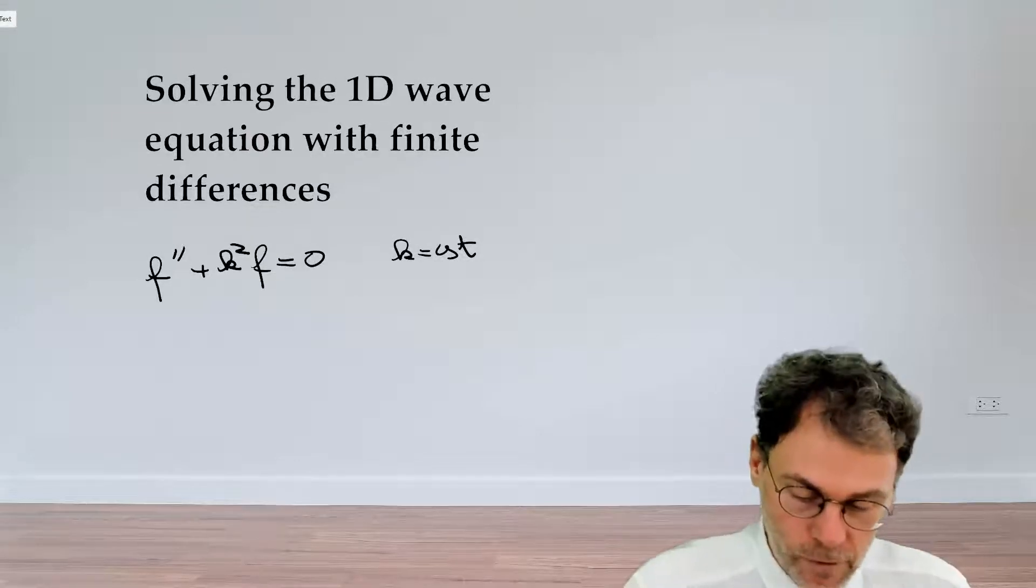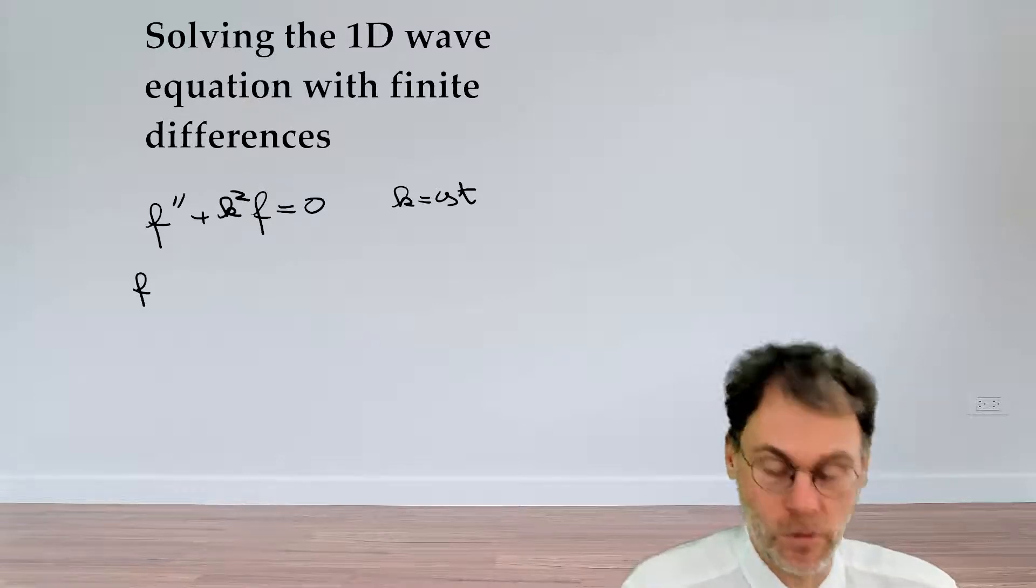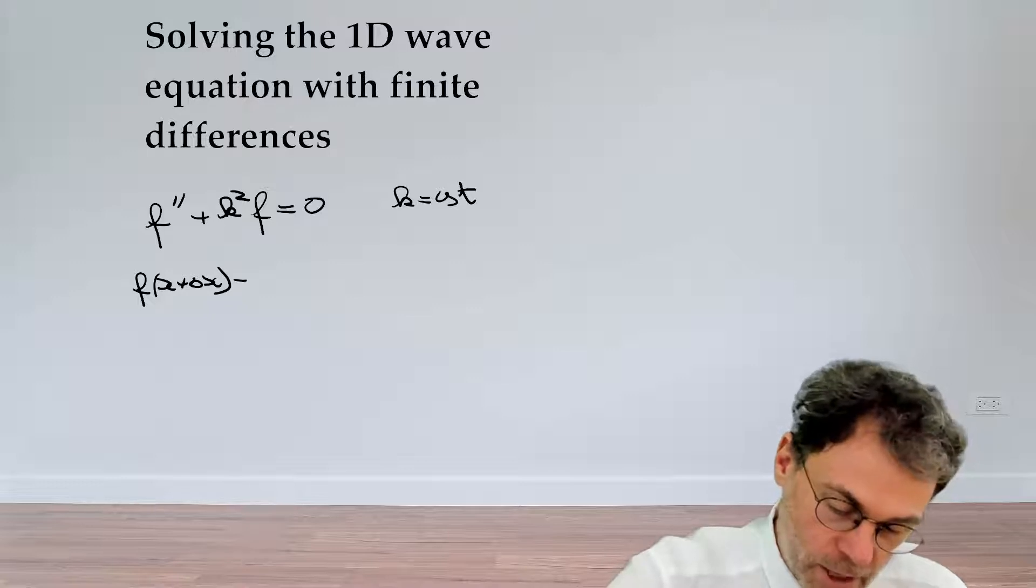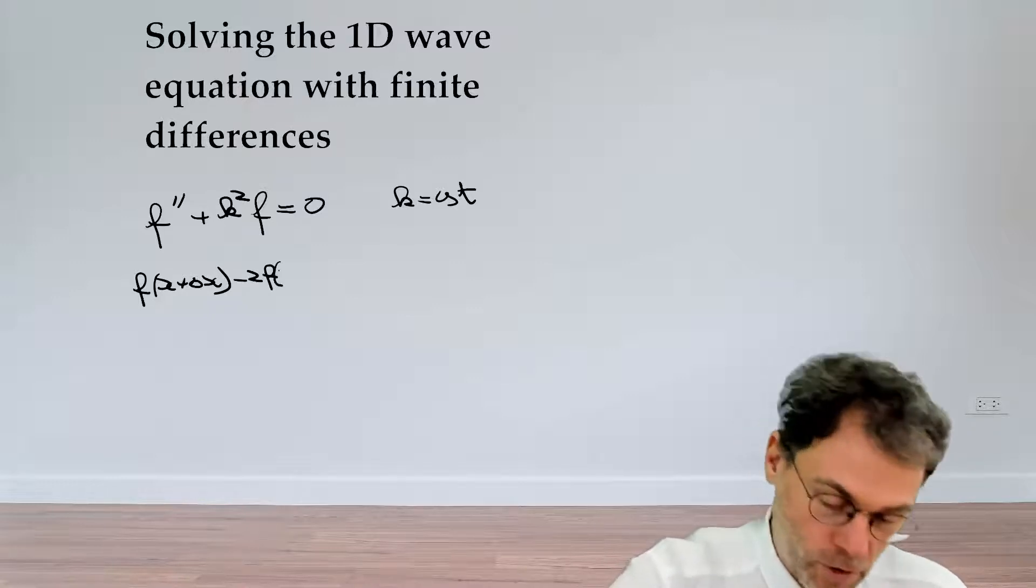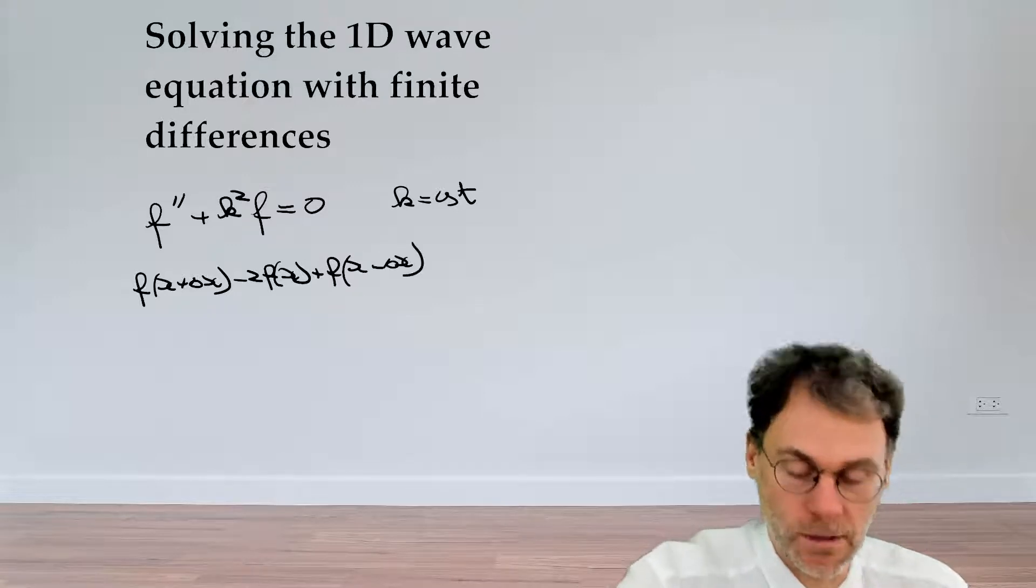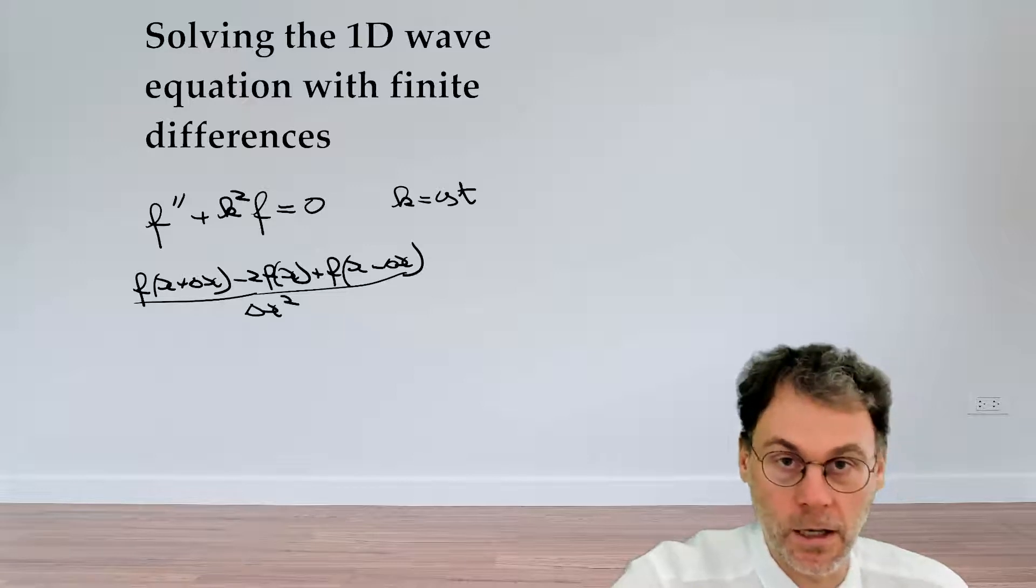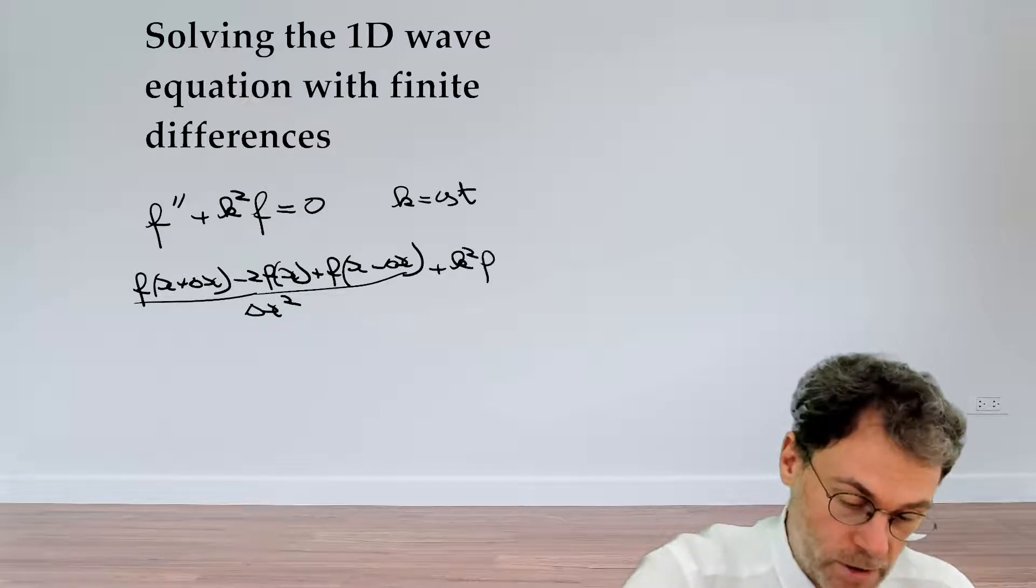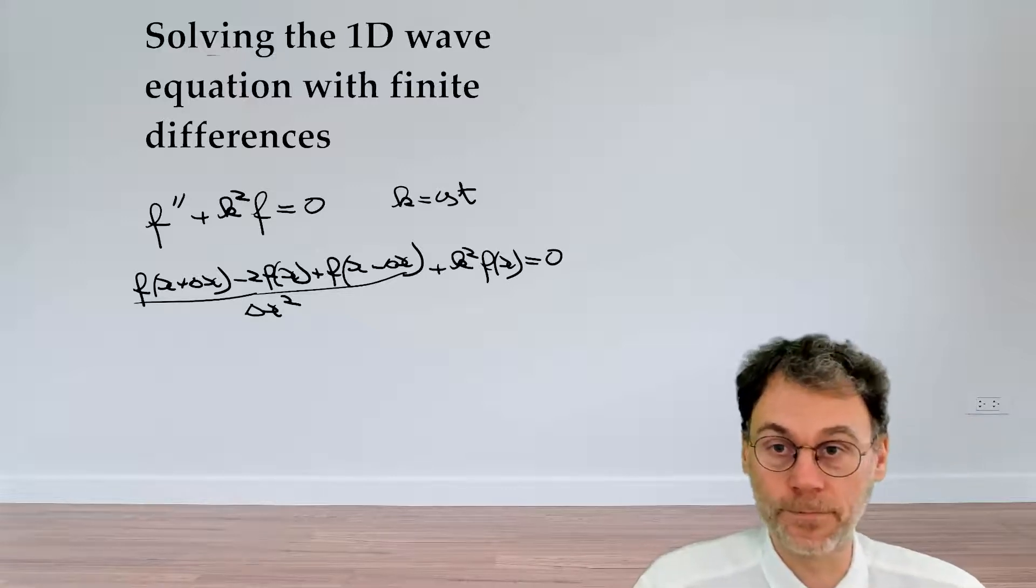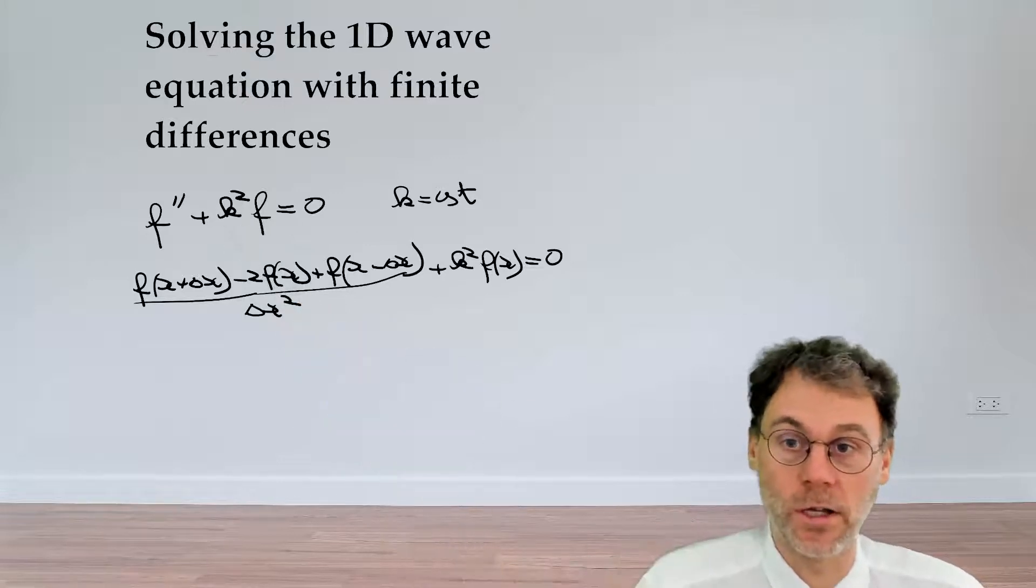Very easy if you looked at the previous video. So the approximation of the second order derivative is f of x plus delta x minus 2f of x plus f of x minus delta x. And we divide the whole thing by delta x squared plus k squared f of x equal to 0. So this is the finite difference approximation of that differential equation.